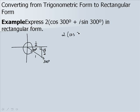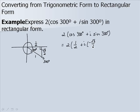So 2 times cosine of 300 degrees plus i sine of 300 degrees equals 2 times the cosine of the reference angle 60 degrees, which is the adjacent over the hypotenuse, or one half. Plus i times the sine of 300 degrees, which is the opposite over the hypotenuse, or negative square root of 3 over 2. So 2 times one half is 1, and 2 times negative square root of 3 over 2 is negative square root of 3. So 1 minus i square root of 3 is our rectangular form.